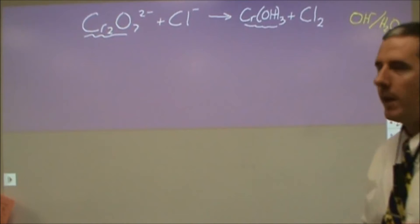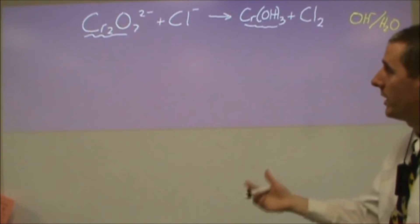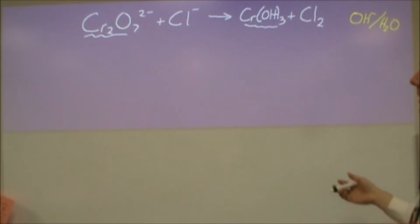I'm going to walk you through balancing a redox reaction in basic solution. This is going to be our example. We're taking dichromate and we're adding chloride to it. It turns into a chromium hydroxide and a chlorine.